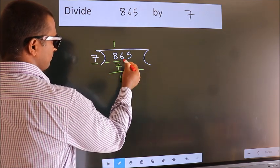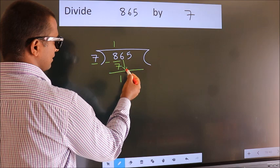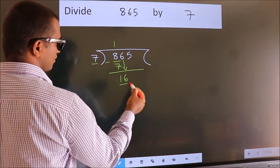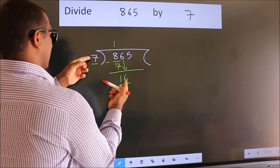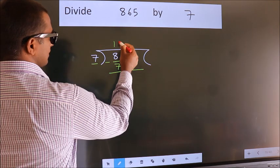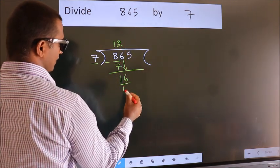After this, bring down the beside number. So, 6 down. So, 16. A number close to 16 in the 7 table is 7 twos, 14.